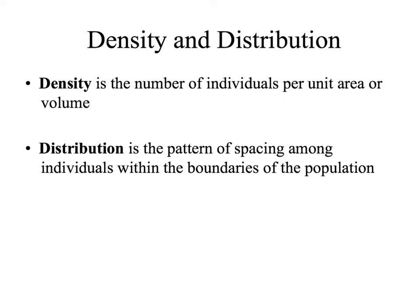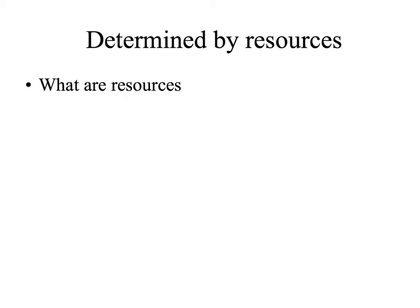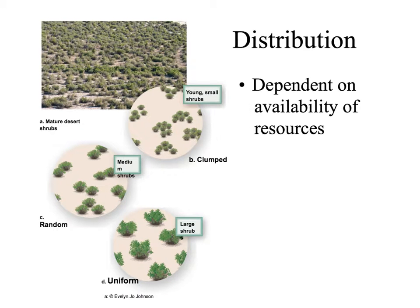Population density refers to the number of individuals per unit area or volume. Distribution refers to the pattern of spacing among the individuals within the boundaries of the population. Both density and distribution rely on resource availability. Resources are the things organisms need to survive — this can be food, water, space, habitat, nutrients, or mates. Any substance or interaction that an organism requires to survive and thrive can be considered a resource.